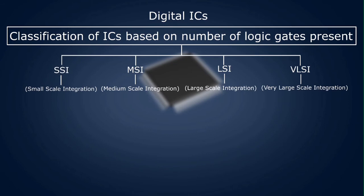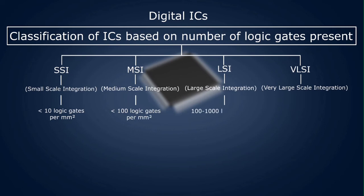SSI — Small Scale Integration — has less than 10 logic gates per square millimeter. MSI — Medium Scale Integration — chips have less than 100 logic gates per square millimeter. LSI — Large Scale Integration — chips have 100 to 1000 logic gates per square millimeter. VLSI — Very Large Scale Integration — chips have more than 1000 logic gates per square millimeter.